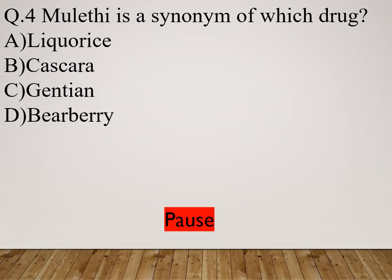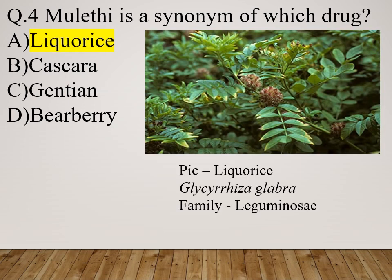Question 4: Mulathe is a synonym of which drug? Option A: Licorice. Option B: Cascara. Option C: Gentian. Option D: Bearberry. The right answer is licorice. The scientific name of licorice is Glycyrrhiza glabra and the family is Leguminosae.